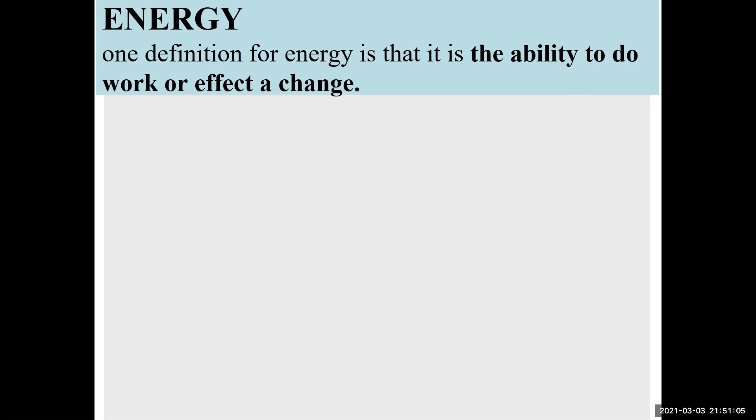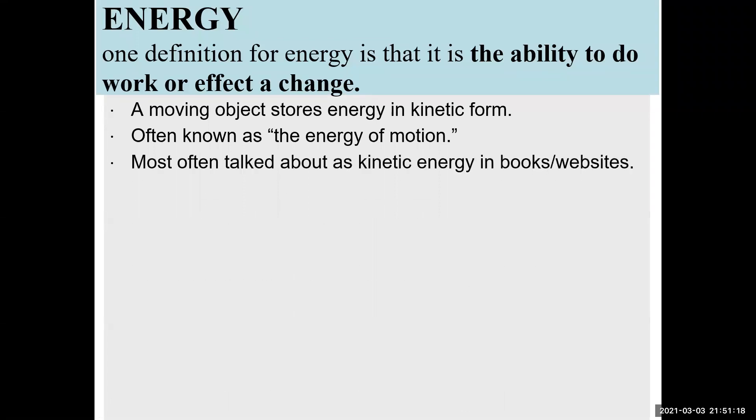One way of defining energy is to talk about it as the ability to do work or affect a change. For example, moving objects store energy in what we call kinetic form. Kinetic energy is otherwise known as the energy of motion. The most common formula for kinetic energy that we have is this one, where if you want to find the kinetic energy of an object, you just multiply its mass times the speed of the object squared and one half, and you have the kinetic energy.